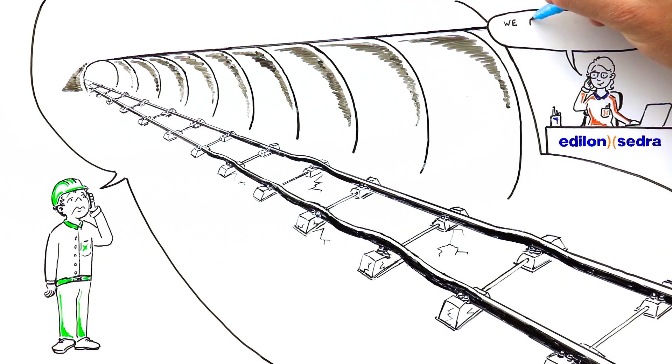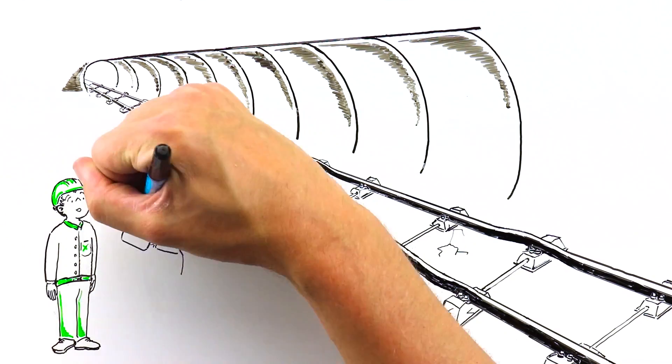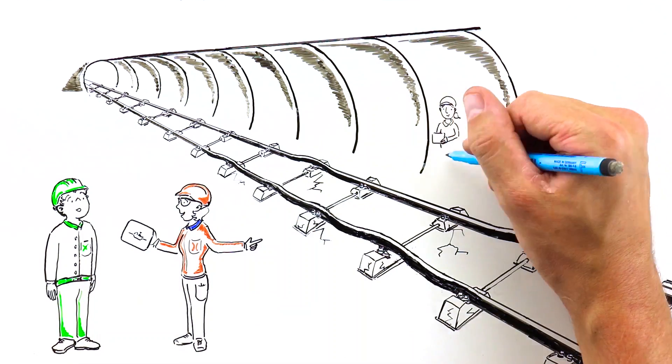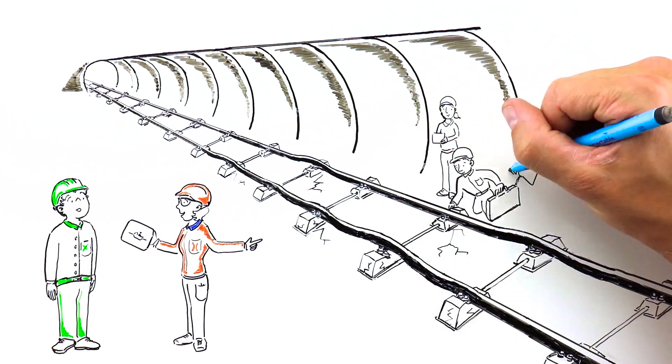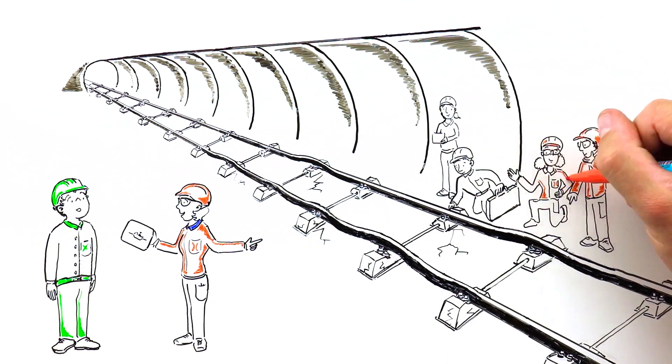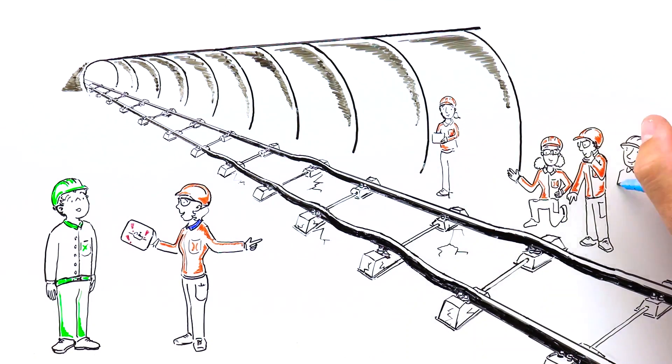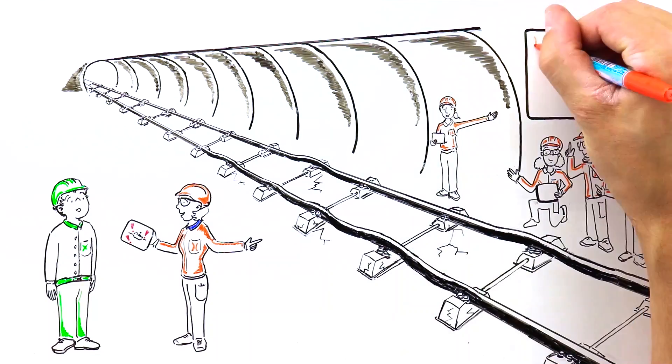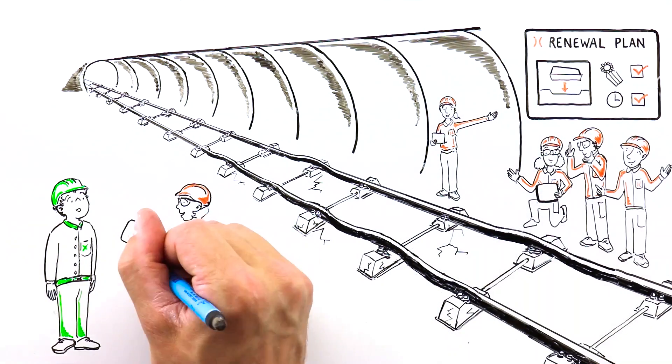Luckily, Edelon Sedra provides a specialized service in the renewal of block systems. Prior to replacing Tim's track, our team of Edelon Sedra application engineers inspects the track and concrete to find specific problems. Edelon Sedra then creates a renewal plan that fits his demands on quality and possession time.